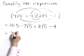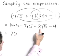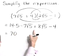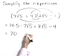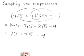14 times 5 is 70. Negative 7 root 5 plus 8 root 5. Combining like terms here gives a positive 1 times the square root of 5. We've got this minus 4 at the end.